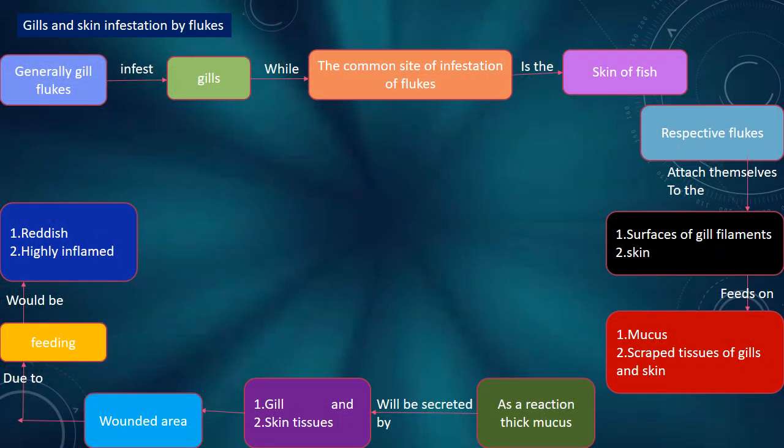Gills and skin infestation by flukes: gill flukes infest the gills, while the common site of infestation of skin flukes is the skin of fish. The respective flukes attach themselves to the surfaces of gill filaments and skin, feeding on mucus and scraped tissues of gills and skin. As a reaction, thick mucus is secreted by gill and skin tissues, and the affected area due to feeding would be reddish with heavy inflammation.